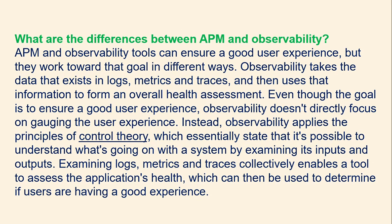What is the difference between APM and observability? APM and observability tools can ensure a good user experience, but they work towards different goals. Observability takes data from logs, metrics, and traces to form an overall health assessment. Even though the goal is to ensure a good user experience, observability doesn't directly focus on the user experience. Instead, it applies the principle of control theory — understanding what is going on with a system by examining its inputs and outputs — to assess the application's health and determine if users are having a good experience.